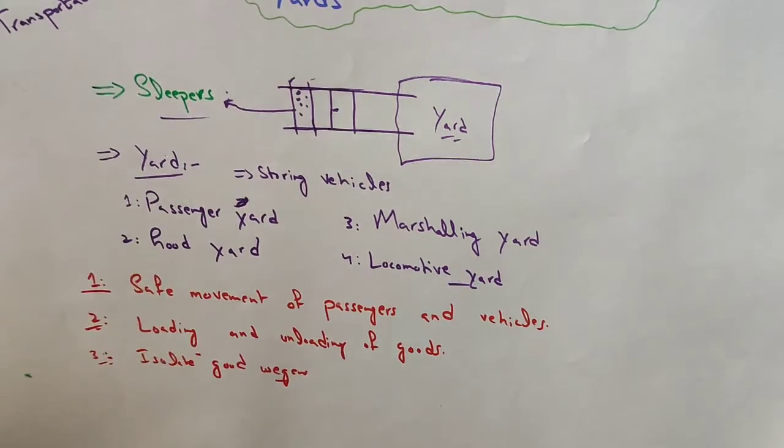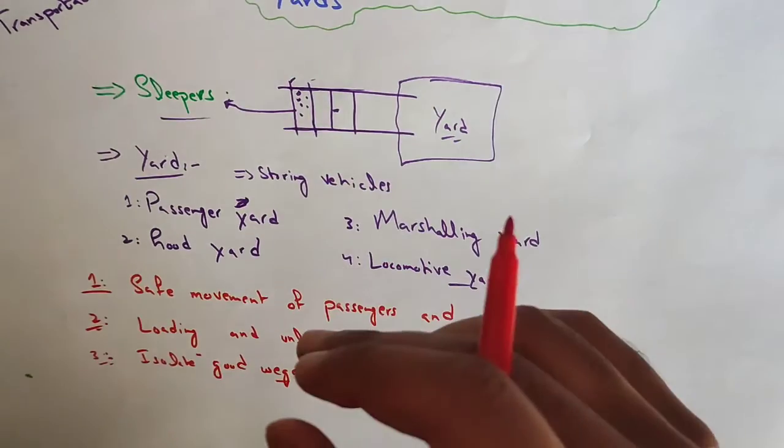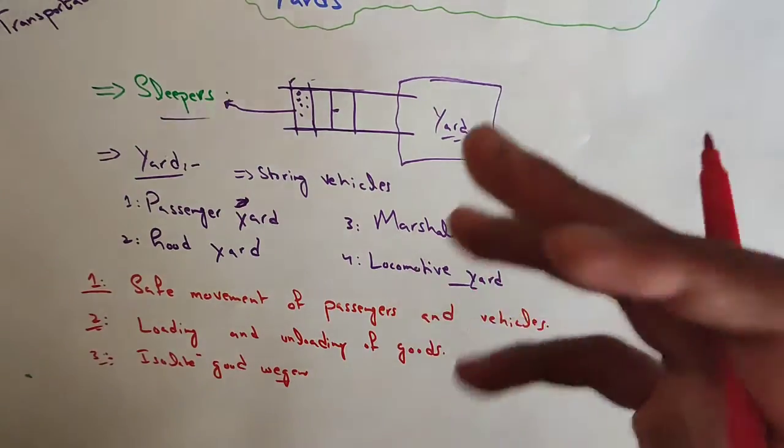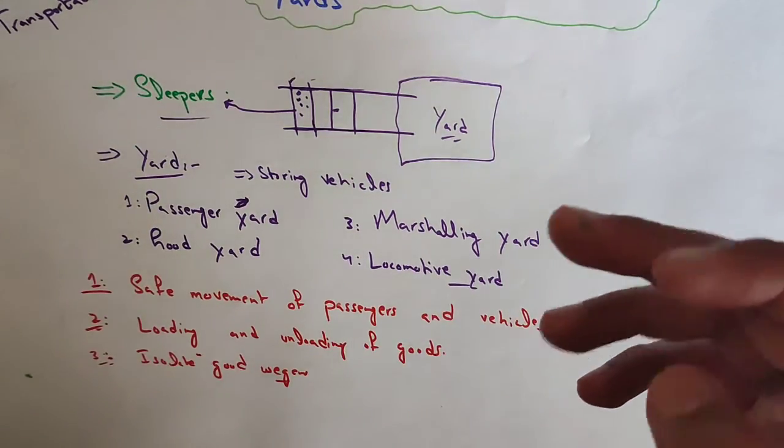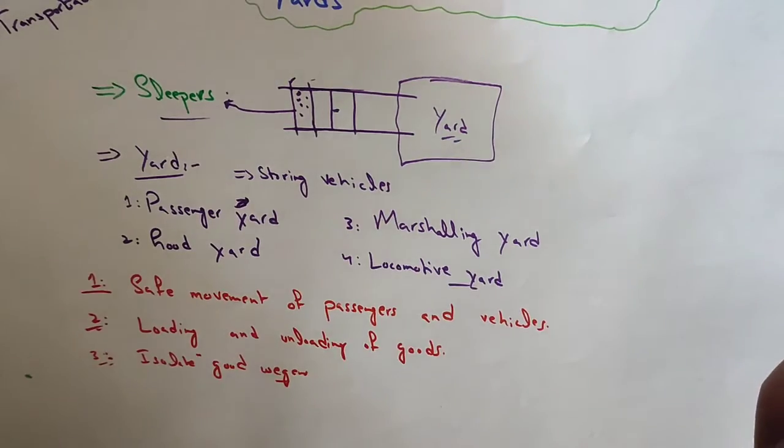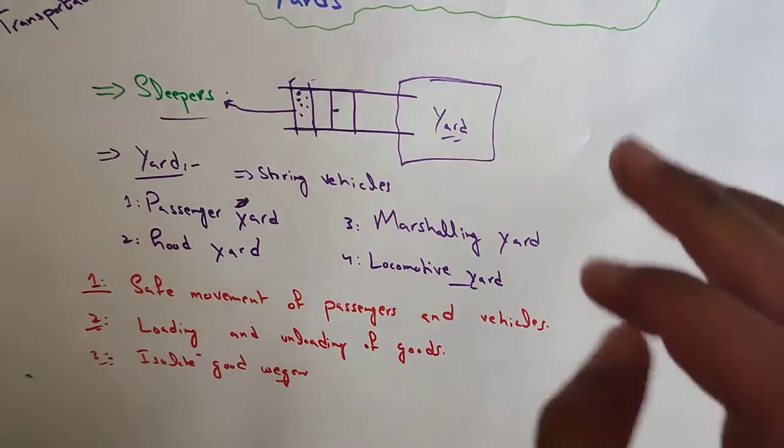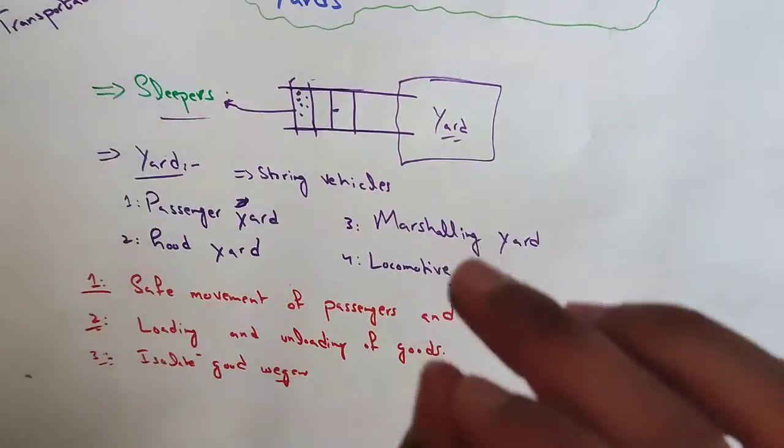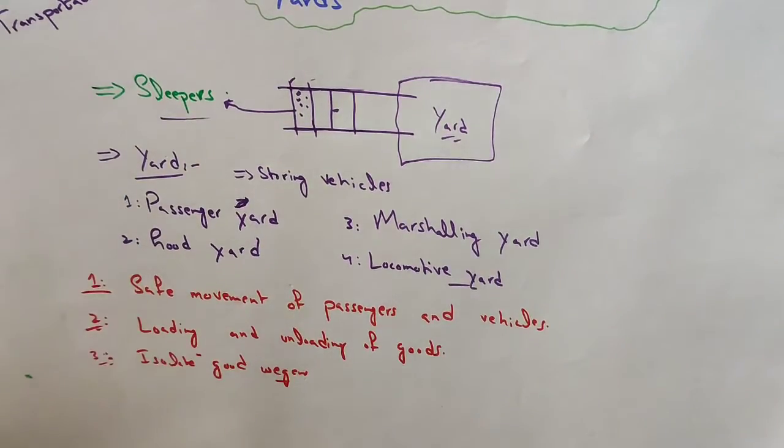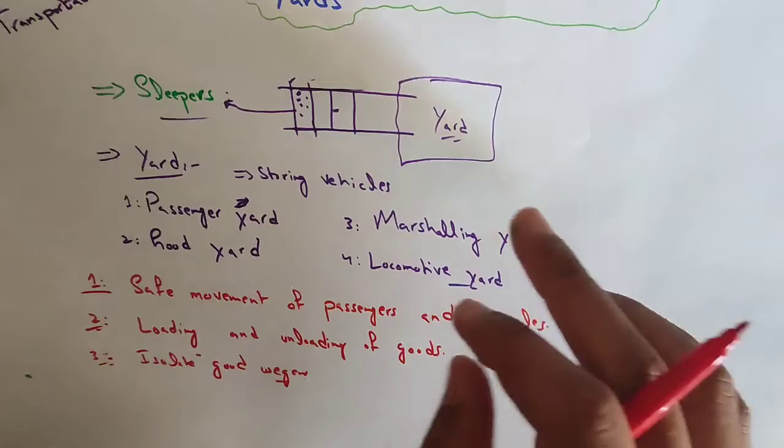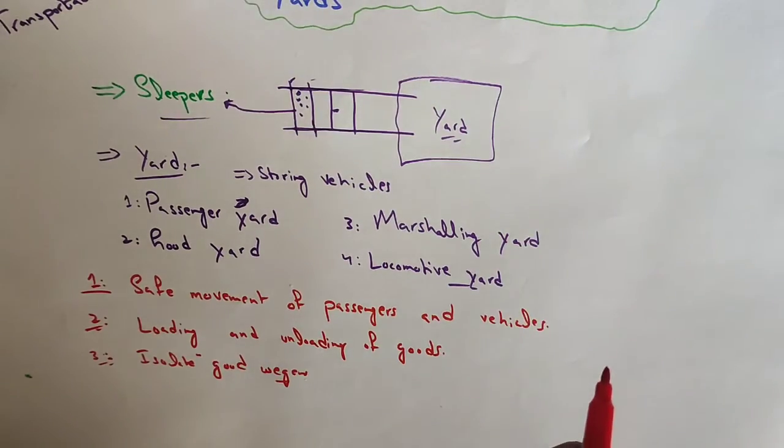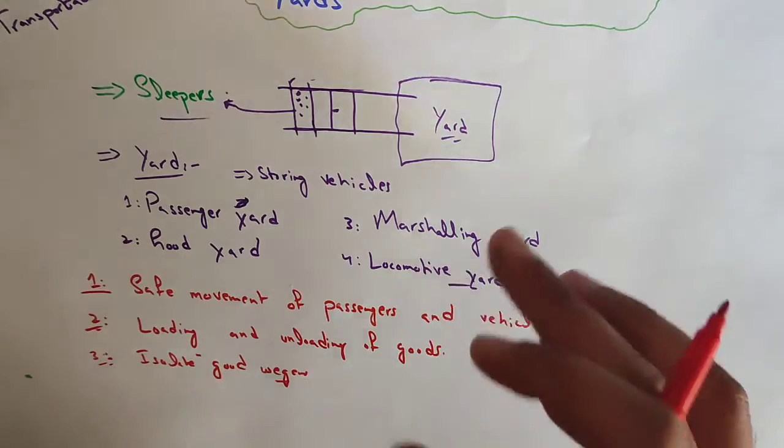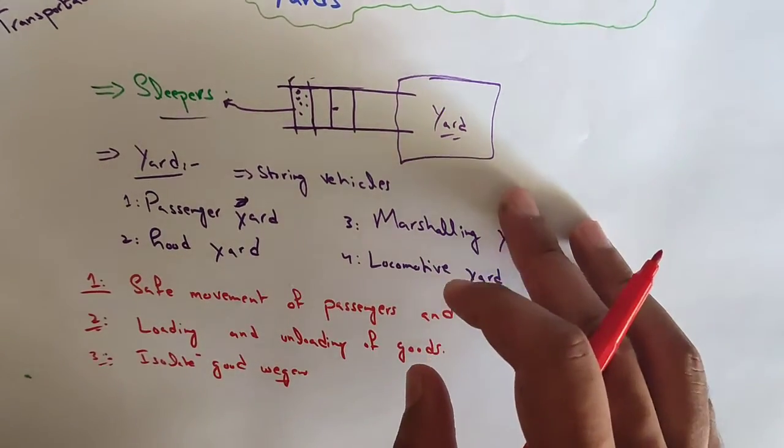In practice, empty wagons are stored in the marshaling yard and the remaining are sent to other places. This is the main function of the marshaling yard and it is very important to regulate our railway system. There are multiple features including reception siding, sorting siding, and departure siding.